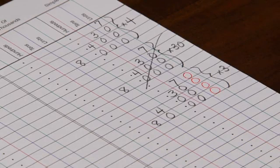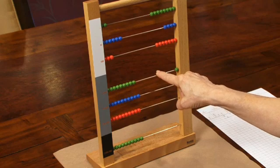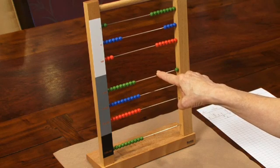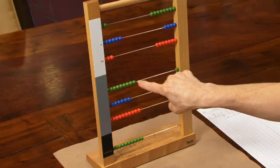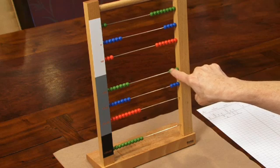8,000 taken 4 times, 8 times 4 is 32, 32,000, 30,000, 2,000.